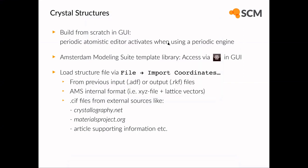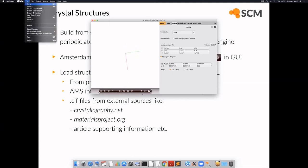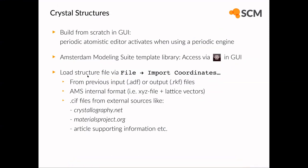Within the Amsterdam Modeling Suite, you can import coordinates — that is, structure files — using the File and Import Coordinates option. Alternatively, there are ways to download from crystallography database websites, and our graphical user interface also supports the import of CIF files.